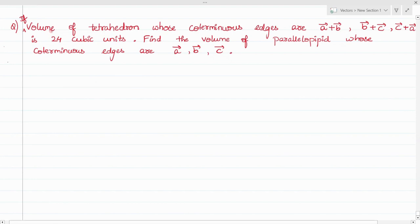In this question it's given that the volume of tetrahedron whose co-terminus edges (meaning co-initial edges) are A plus B, B plus C, and C plus A is 24 cubic units. The edges are these three, and we need to find the volume of parallelepiped whose edges are just A, B, and C.